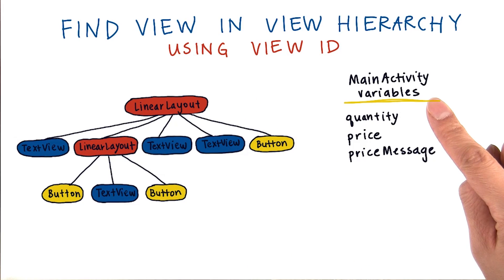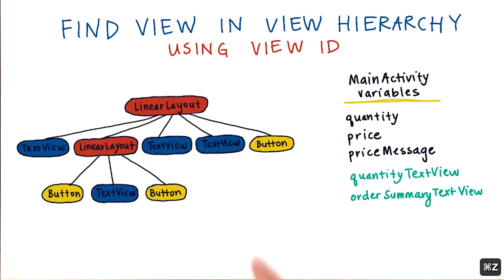These are the variables we've used so far in the main activity. We have a variable for quantity, price, and price message. This is a mix of local and global variables. To interact with the views in the view hierarchy, we should create variables that reference these specific views.